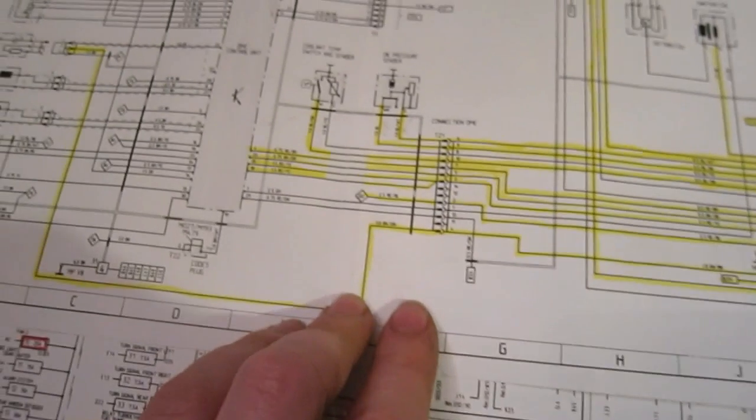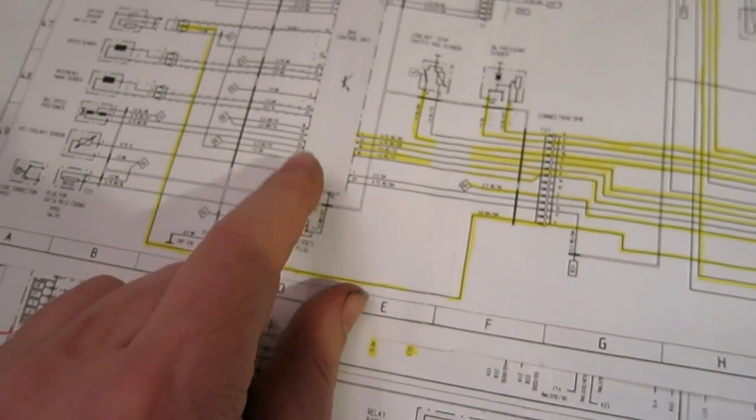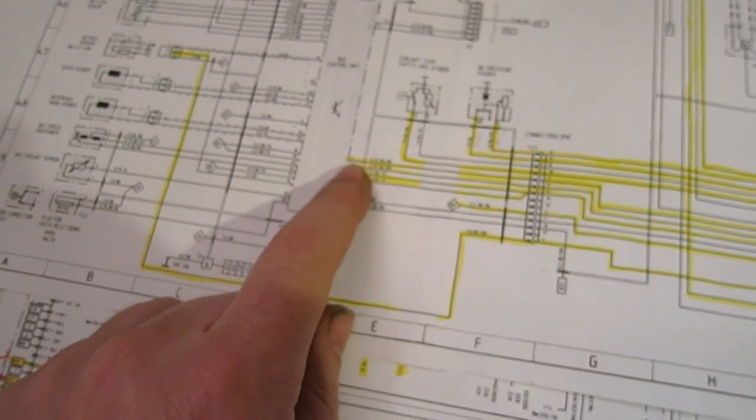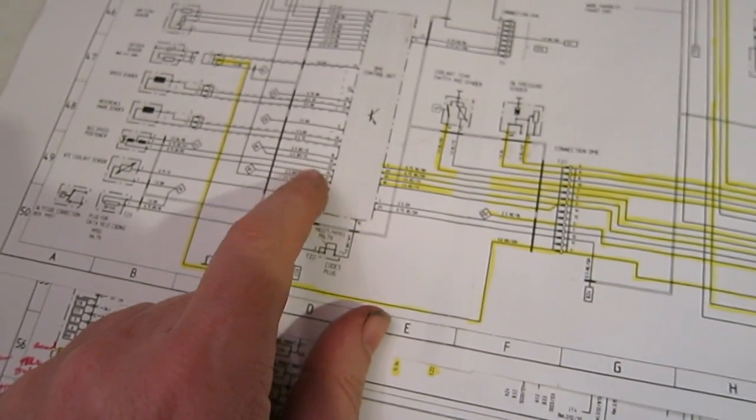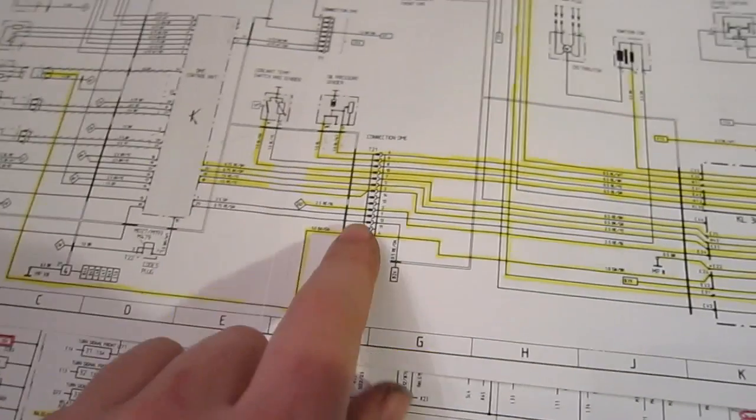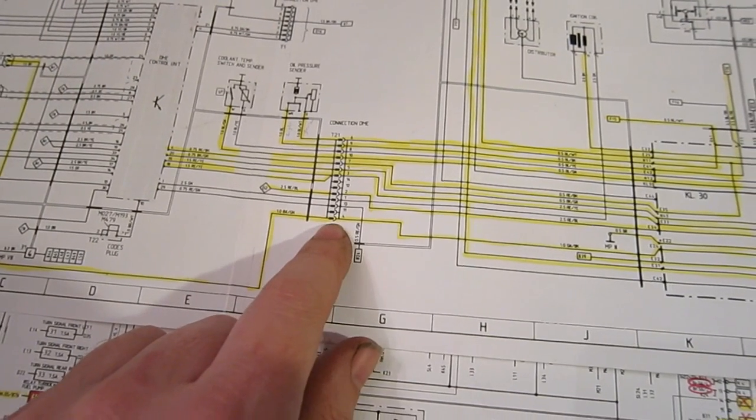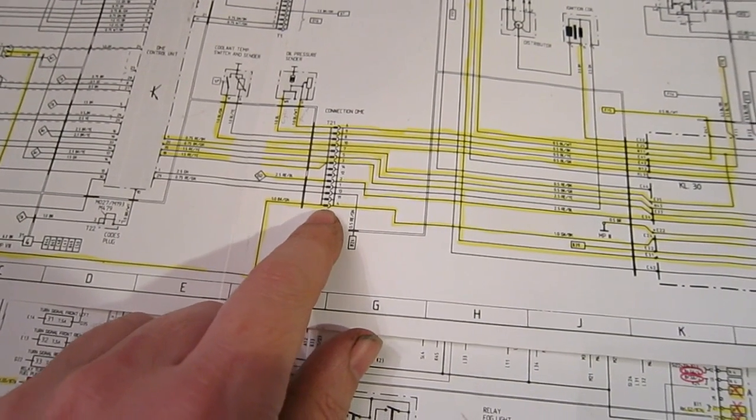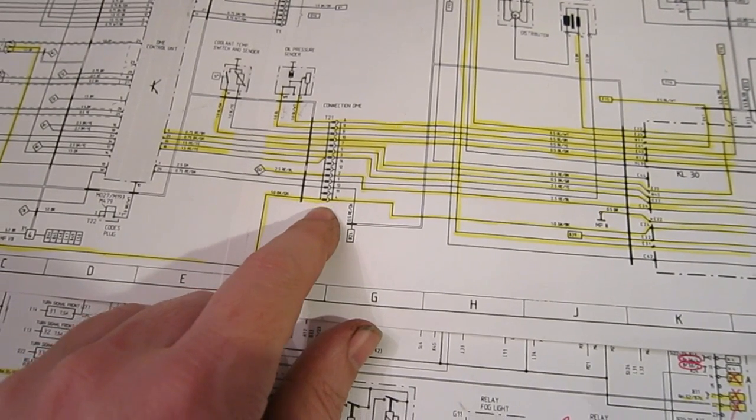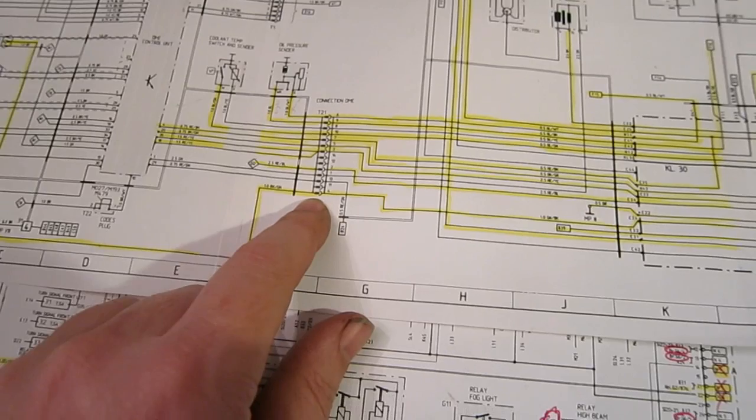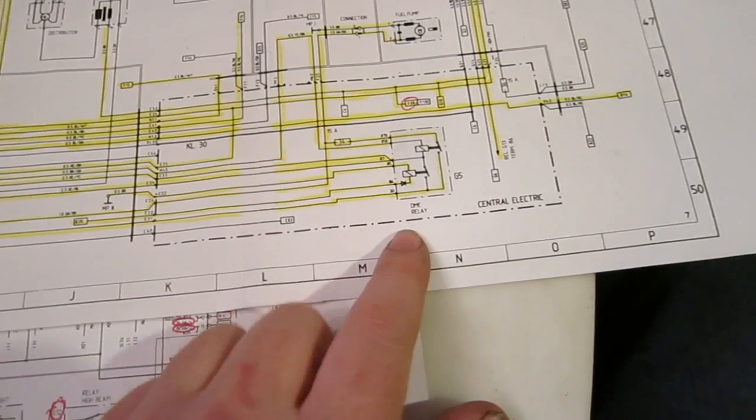Here's another plug, so this is our DME unit here. So all of these numbers along the side are actually the pin number for the DME plug. And then this is a big plug. This is the plug that is in front of the firewall by the fuse block in the engine compartment, kind of by the brake booster.